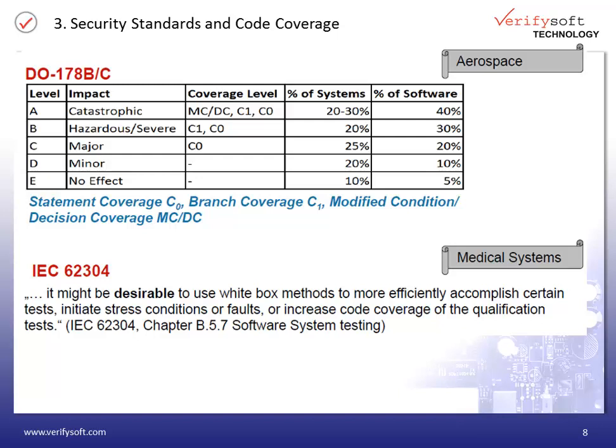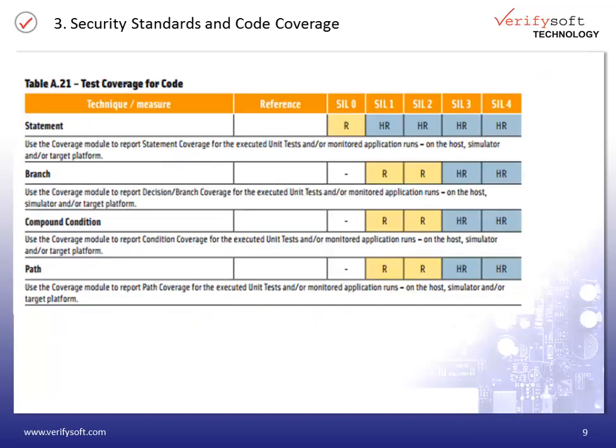But also here, you can be sure that you will run into problems when a software error remains in the software because it had not been tested properly, and this causes injury or death. And the last standard for today, EN 50128 for railway applications, has also similar requirements in terms of code coverage.